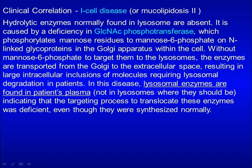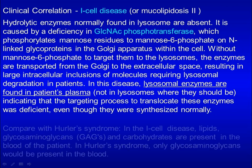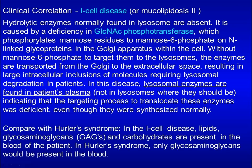In I-cell disease, lysosomal enzymes are found in patients' plasma. Compared with Hurler syndrome, in I-cell disease, lipids, glycosaminoglycans, and carbohydrates are present in the blood of the patient. In Hurler syndrome, only glycosaminoglycans will be present in the blood.